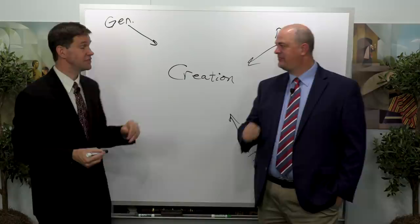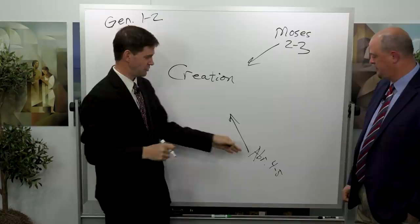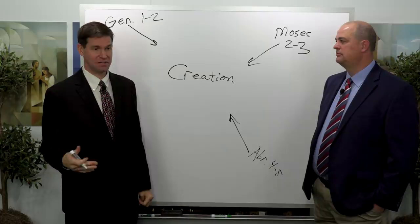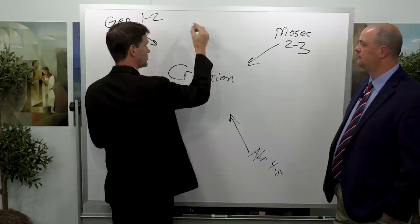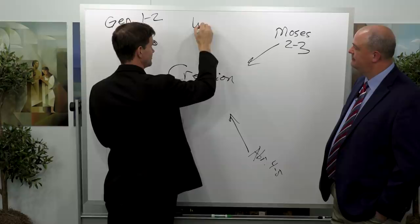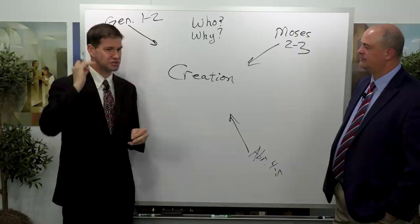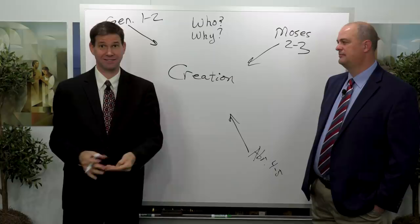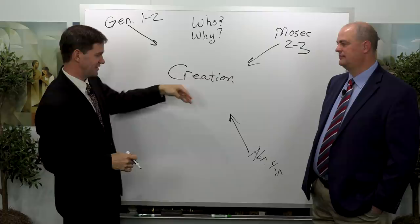If you're looking to Genesis 1 and 2, Moses 2 and 3, or Abraham 4 to 5 for exact scientific blueprints for how the creation took place, you'll spend a lot of time spinning wheels going nowhere — these accounts aren't trying to answer the how. They're answering two questions predominantly: Who? Who is God, who are we, how does that relationship fit? And why? Why did he create the earth for us, why do we exist? If you're looking for just those two things, this is a great adventure.